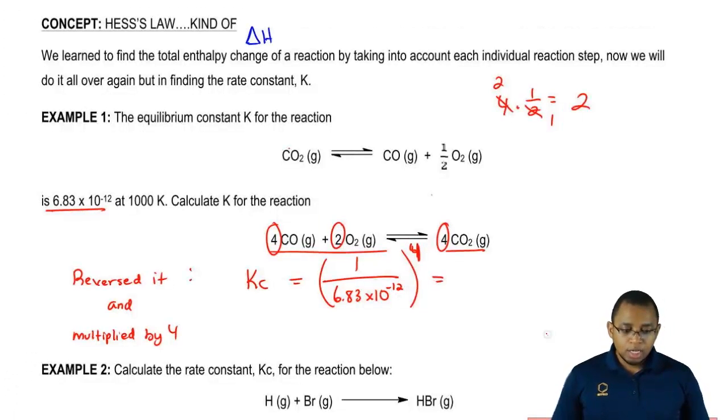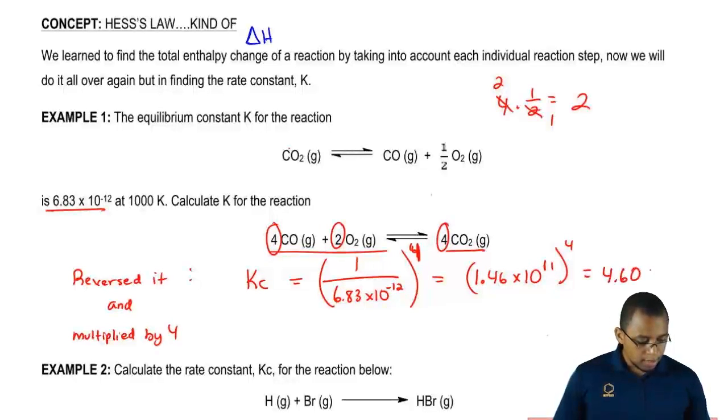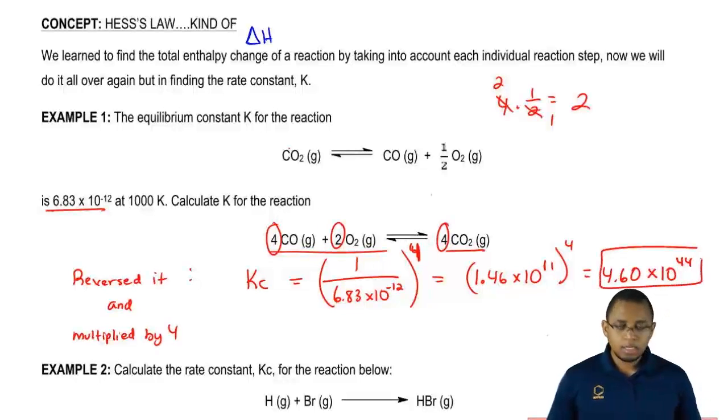What we're going to do here is just solve for what's inside first. 1 over 6.83 times 10 to the negative 12, that gives us 1.46 times 10 to the positive 11, and now that's to the fourth. That's going to give me 4.60 times 10 to the 44. That will be our answer here.